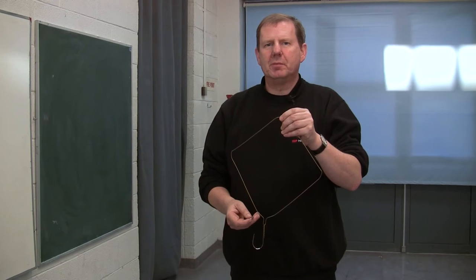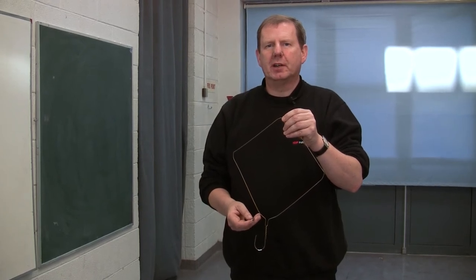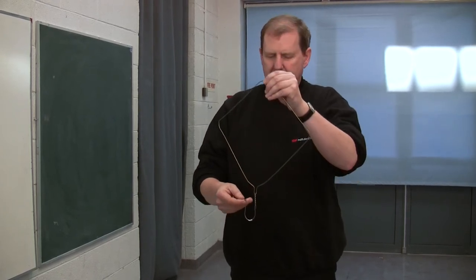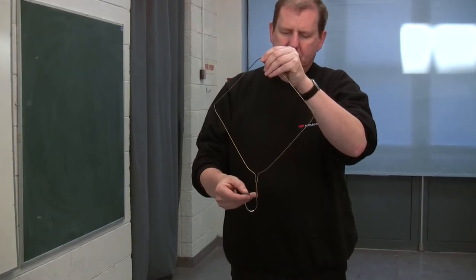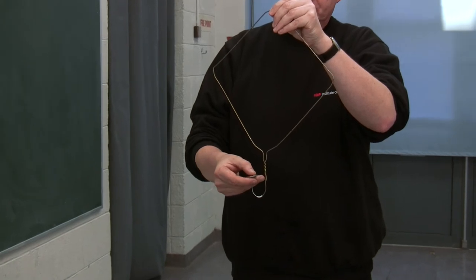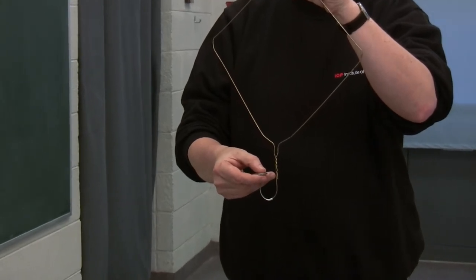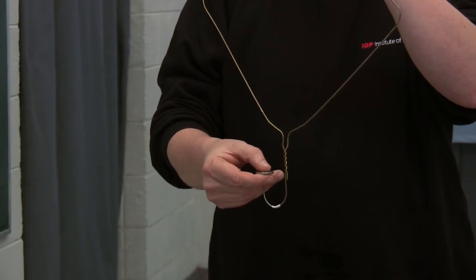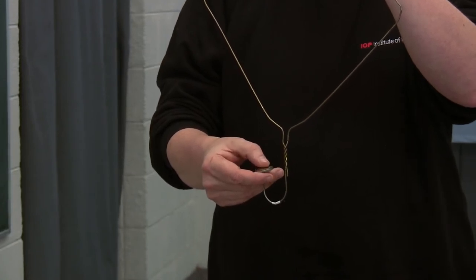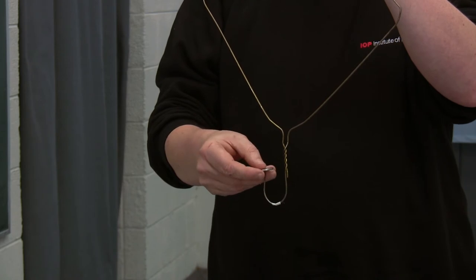This demonstration is called the amazing swinging coat hanger and coin. I'm going to balance a 2 euro coin onto this coat hanger which is in the shape of a diamond, and indeed this can be the hardest part of the experiment.